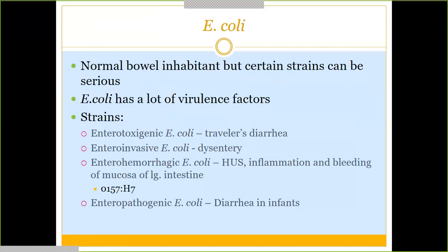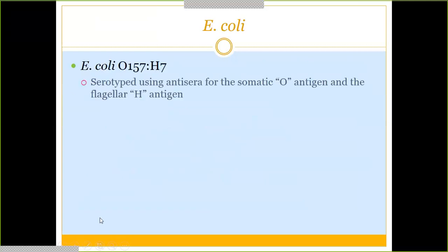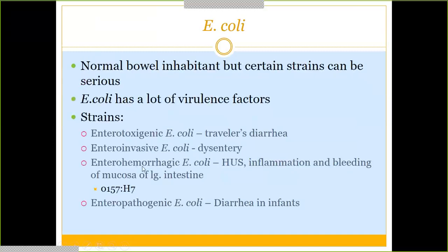Enteroinvasive E. coli results in dysentery — nasty diarrhea. Enterohemorrhagic E. coli is the big bad one — this is E. coli O157:H7, a specific serotype known to cause hemolytic uremic syndrome (HUS): a hemolytic anemia process with lots of bleeding that shuts down your kidneys. The O stands for an O antigen and the H for the H antigen on the flagella. Enteropathogenic E. coli primarily affects infants with diarrhea.